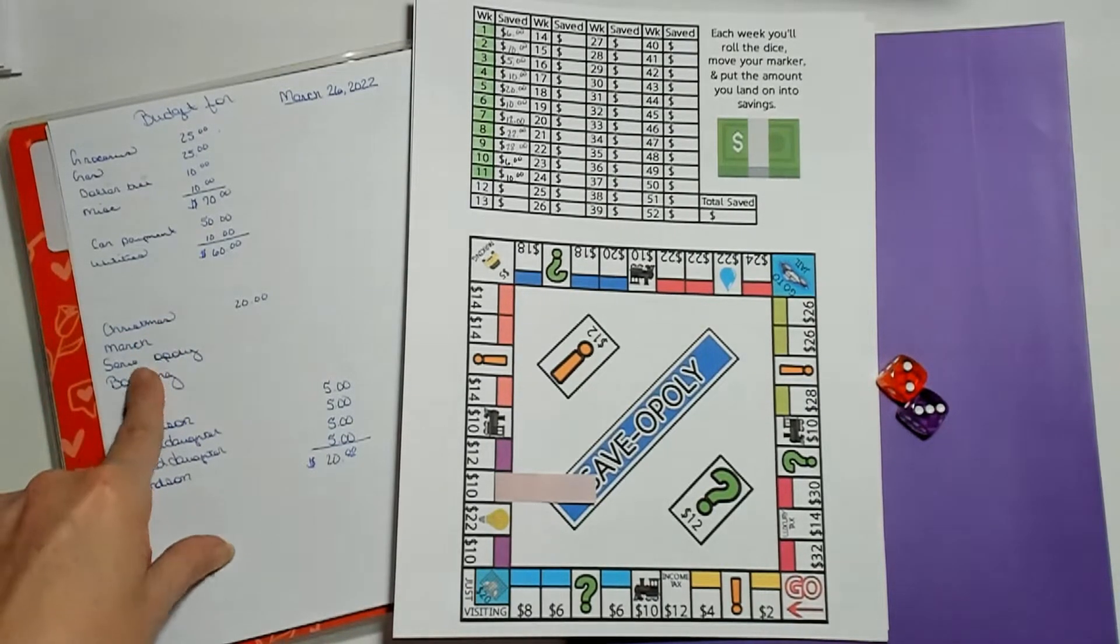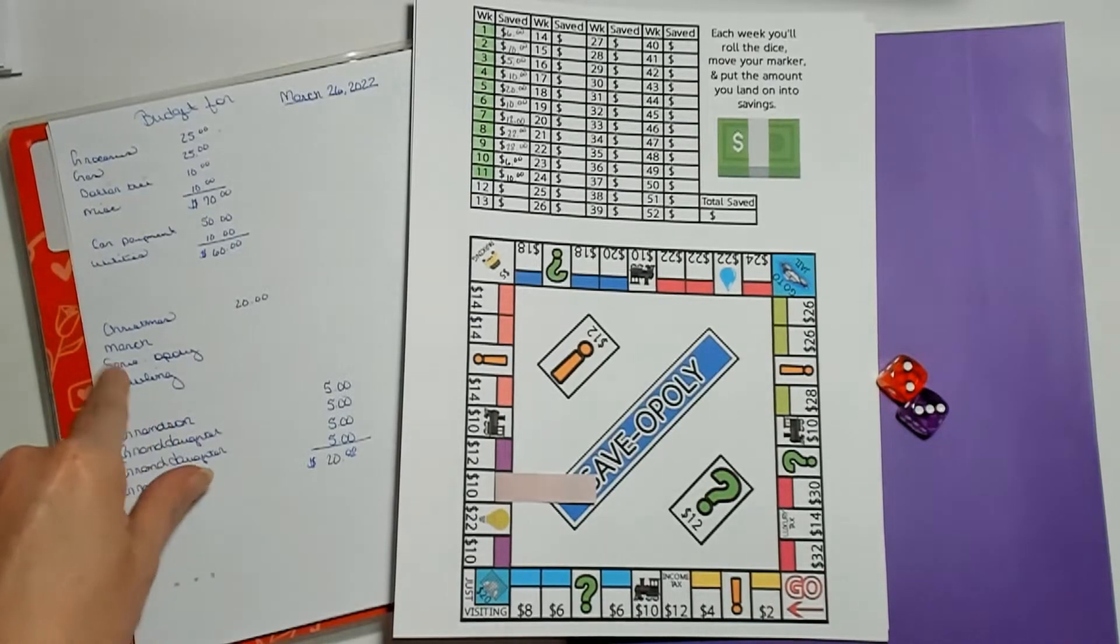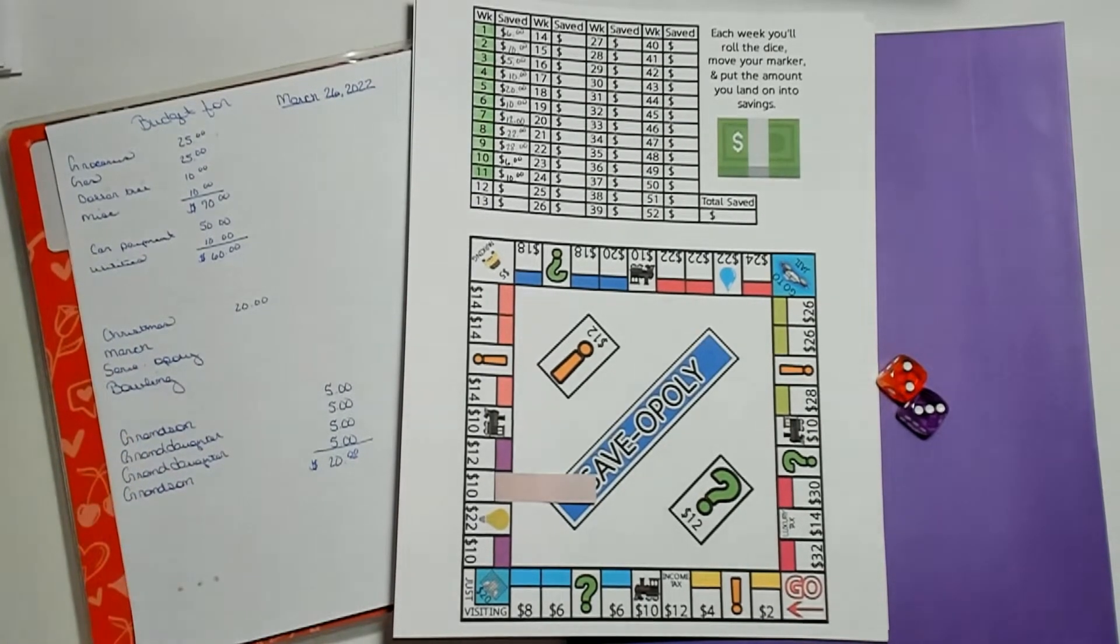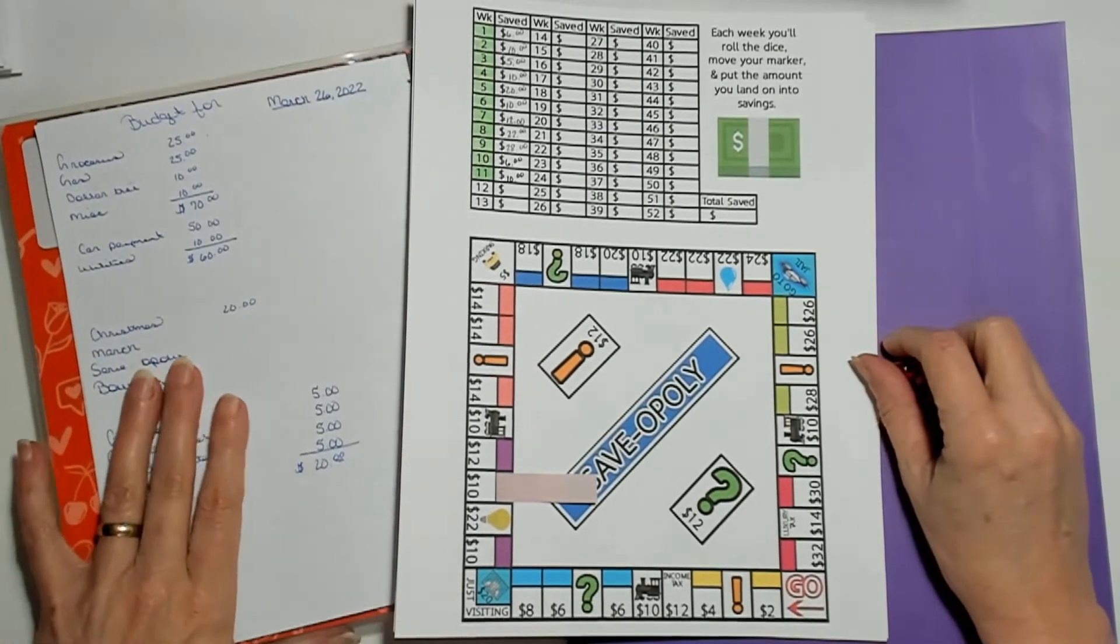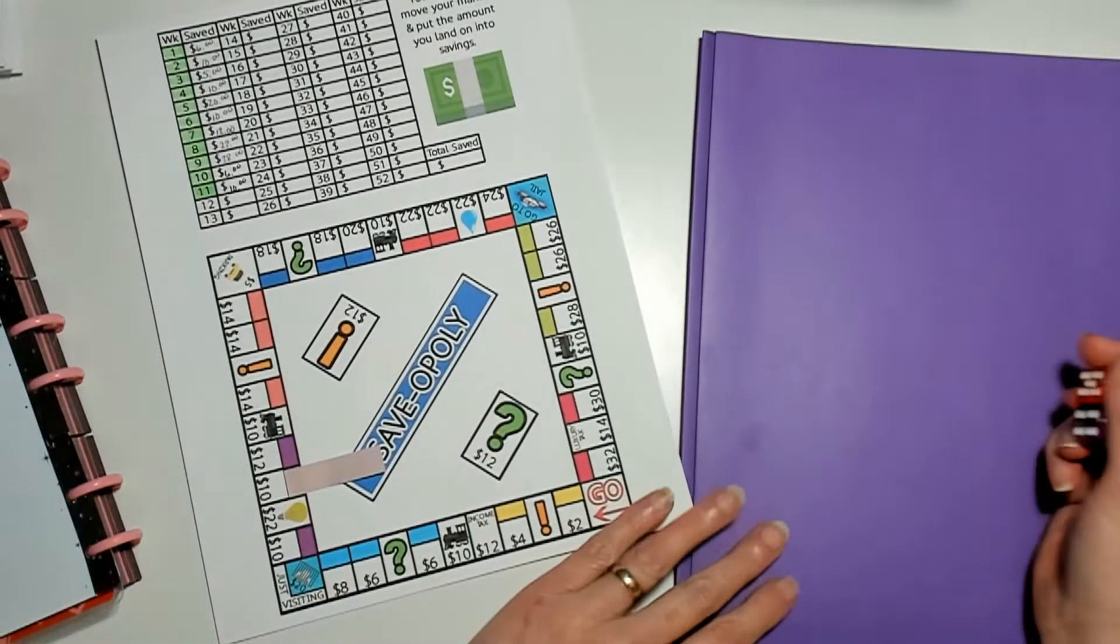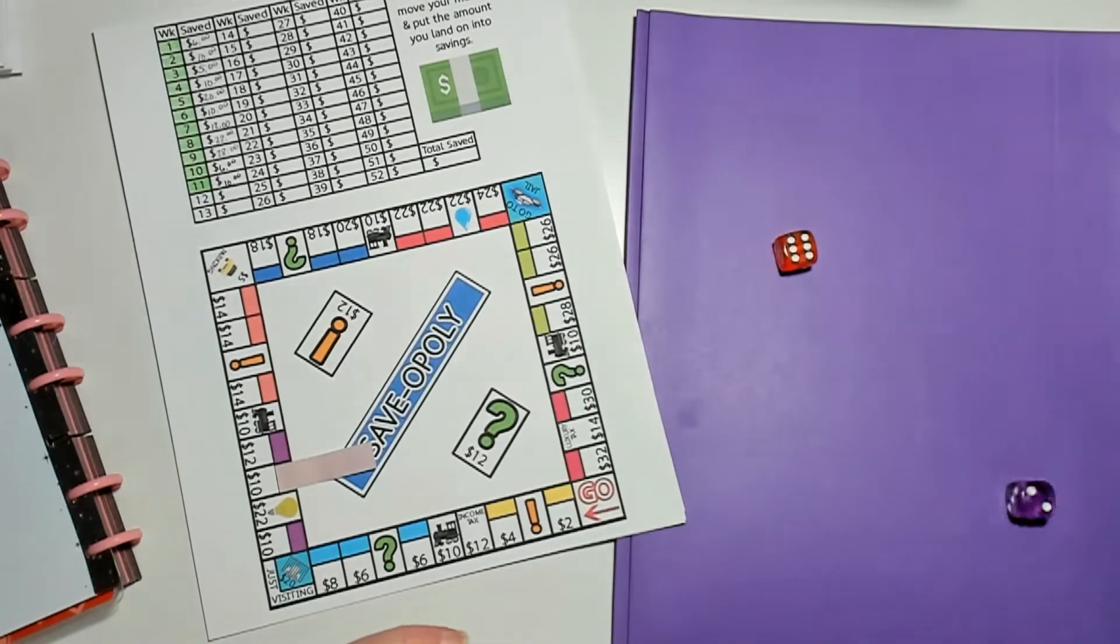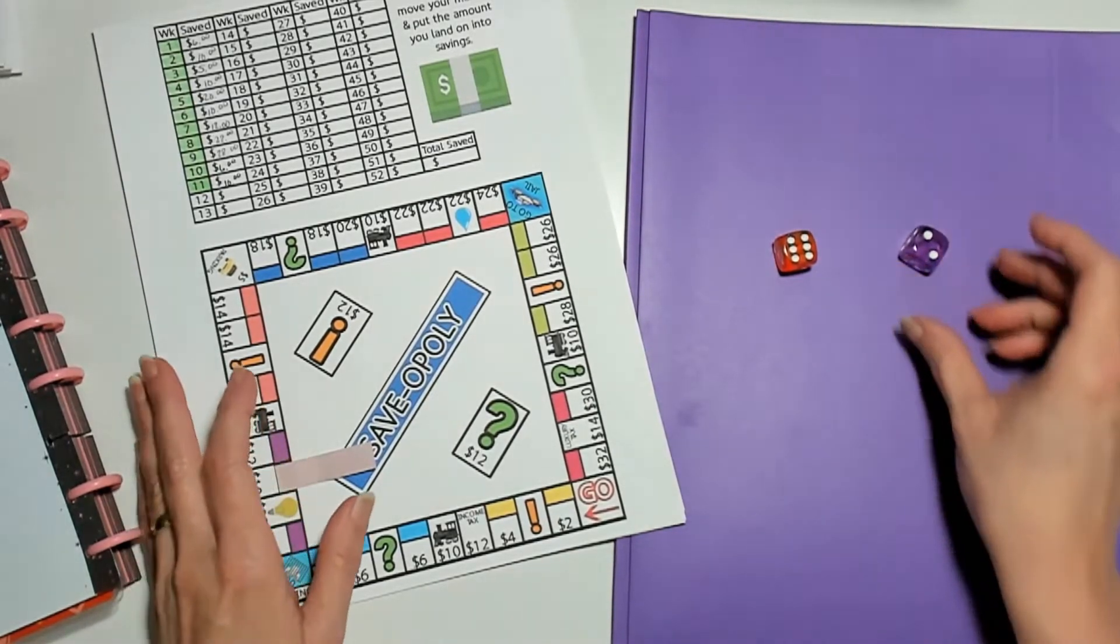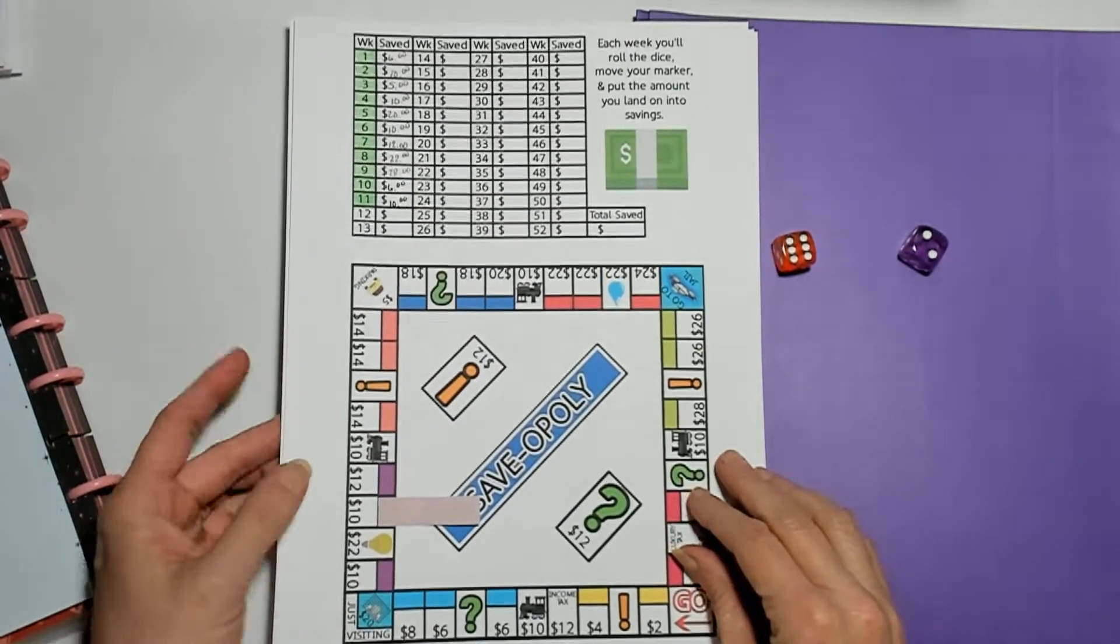And of course, I've got to go down here and figure out what these are. So let's get started. I'm going to start with Monopoly. And we're at eight. So we're going to move eight.